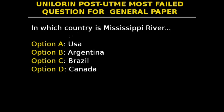Hello guys, this is question 39 in our series. In which country is the Mississippi River? The Mississippi River is the chief river of the second largest drainage system on the North American continent, second only to the Hudson Bay drainage system, and it is entirely in the USA. So the answer is option A, the United States of America.